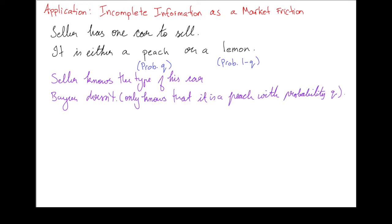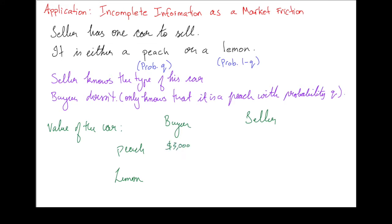The value of this car depends on whether it's a peach or a lemon. If the car is a peach, it's worth $3,000 to the buyer and $2,000 to the seller. And if it's a lemon, then it's worth $1,000 to the buyer and nothing to the seller.